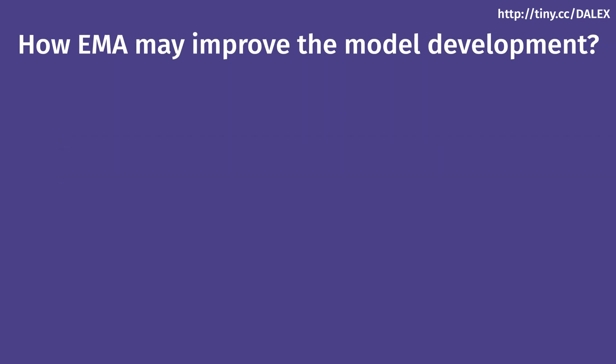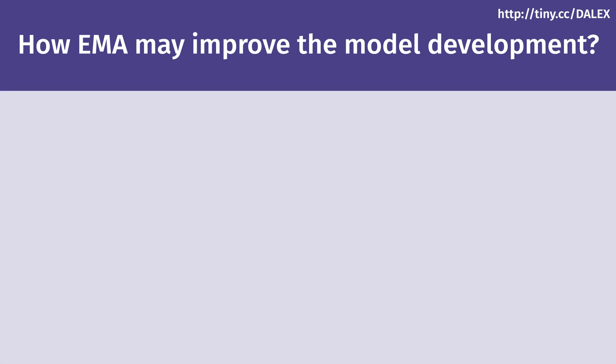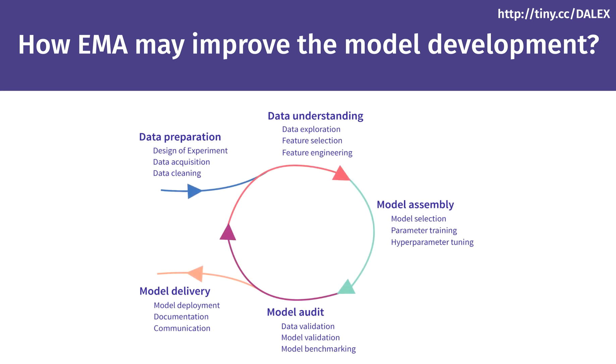How EMA may improve the model development? EMA methods can be applied in any part of the model development cycle. A typical process of building a predictive model is based on three steps repeated: deepen the understanding of data, prepare a new version of the models, and assess the quality of the model. In each of these stages, we can use EMA methods.